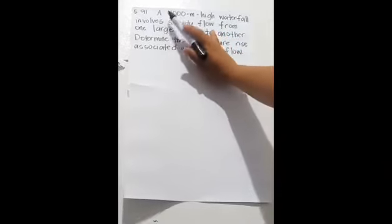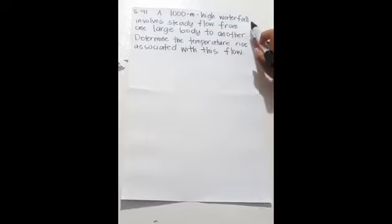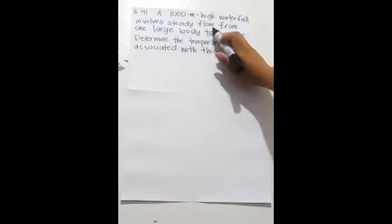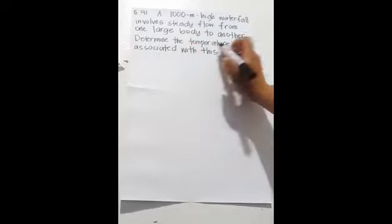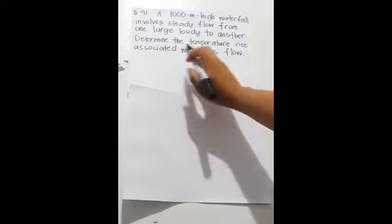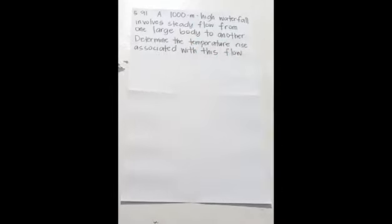So the problem goes here: A 1,000 meter high waterfall involves steady flow from one large body to another. Determine the temperature rise associated with this flow.